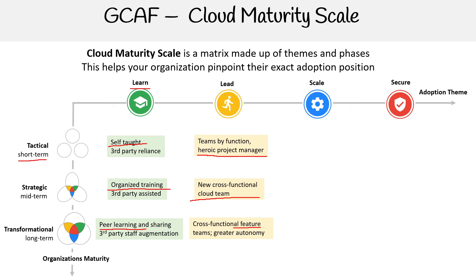So maybe you have a data team and a DevOps team. The idea is that you also want to make sure they have the control to do what they need to do in their own space. In Google Cloud, they're going to have their own folder and can self-govern all their projects there — they can do shadow IT without having to access centralized IT. For Scale and Tactical, change is slow and risk is ops-heavy.